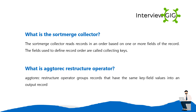What is the Sort Merge Collector? The Sort Merge Collector reads records in an order based on one or more fields of the record; the fields used to define record order are called collecting keys. What is a Directory Structure Operator? A Directory Structure Operator groups records that have the same key field values into an output record.